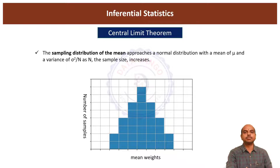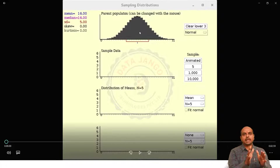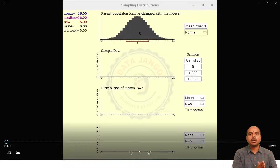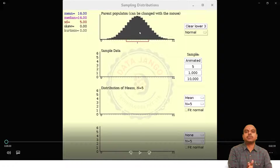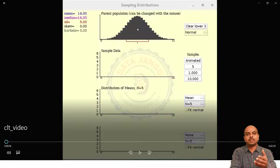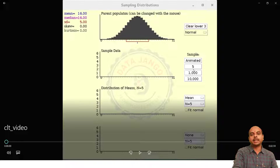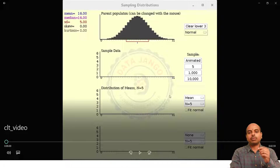Let us try to understand this concept with a simple animation. Here I have taken a population which is normally distributed. The central limit theorem says that whether the population is normally distributed or not — irrespective of the population's distribution — when you take n number of samples and take their means, the distribution of all those means is definitely going to be normally distributed. For simulation purposes, I have taken one population which is normally distributed, and I am going to take samples of size 5 and maybe 10,000 samples and look at the distribution. From the same population, I will also take samples of size 20.